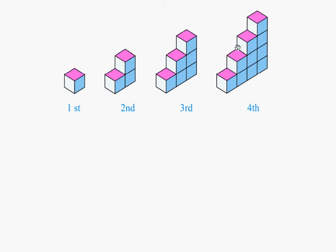Let's analyze the pink faces. The hundredth term will have one hundred such faces on top — the fourth one has four, the third one has three, the second one has two, the first one has one. Clearly, the hundredth term will have one hundred pink faces on top.